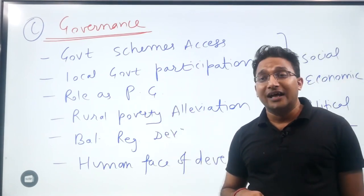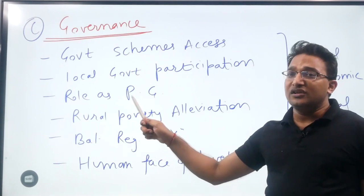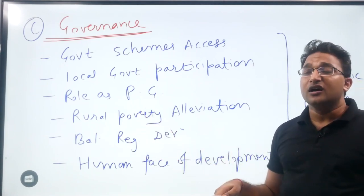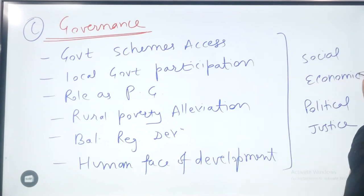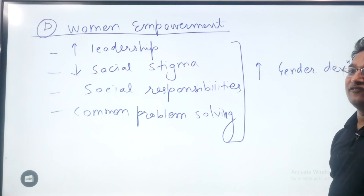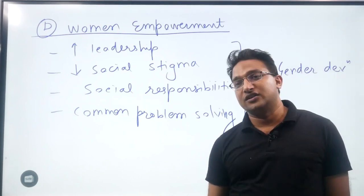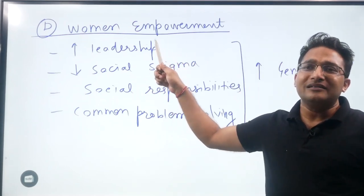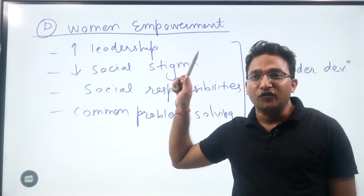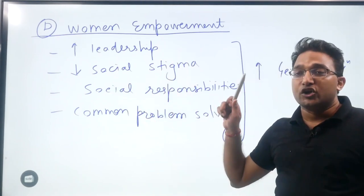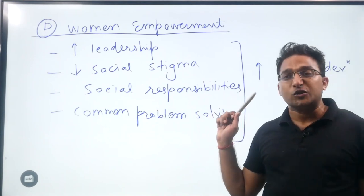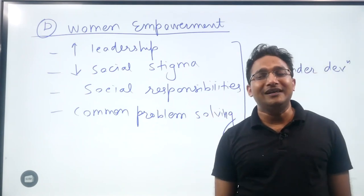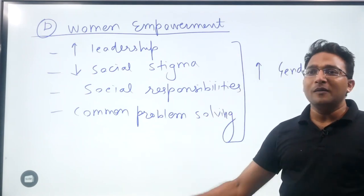Self-help groups help in rural poverty alleviation and balanced regional development because they are located in remote areas and represent the human face of development. They boost the spirit of DPSP in the form of social, economic, and political justice. For women's empowerment, they contribute by increasing leadership skills, reducing social stigma, and more social responsibility being undertaken by women and common problem solving.